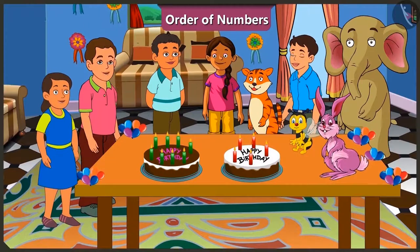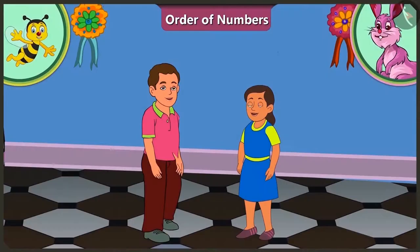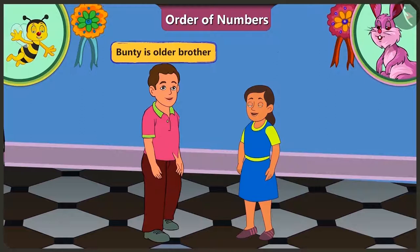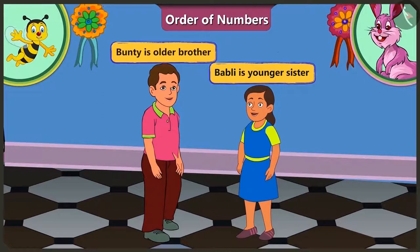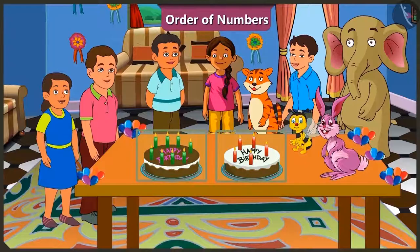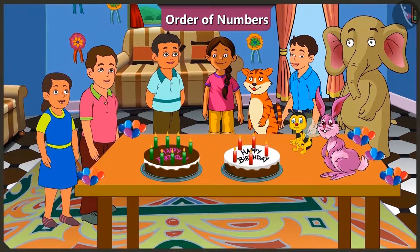Today both my elder brother and I are celebrating our birthday. Welcome to the party. Look honey, Bunty is older than Bubbly. But still, both their birthday cakes have equal number of candles. Oh no Bunny, Bunty's cake has more candles on it. Come on, let's count them.